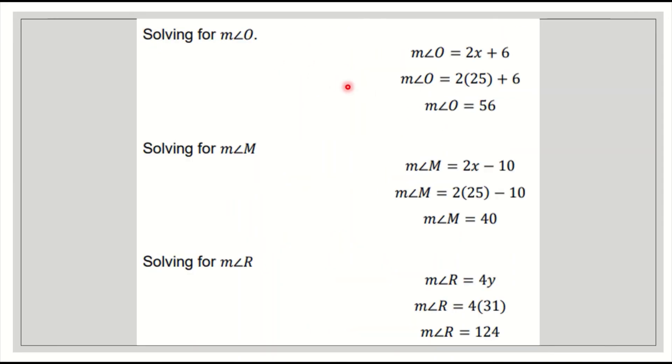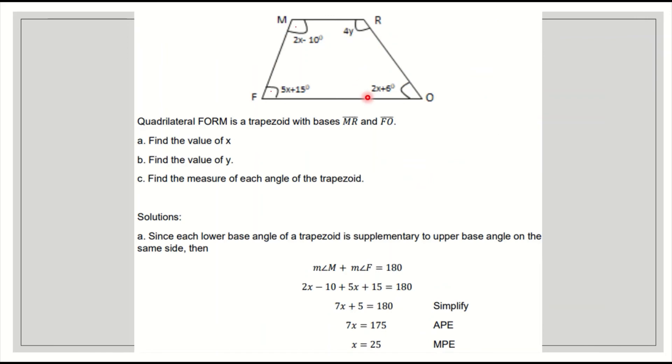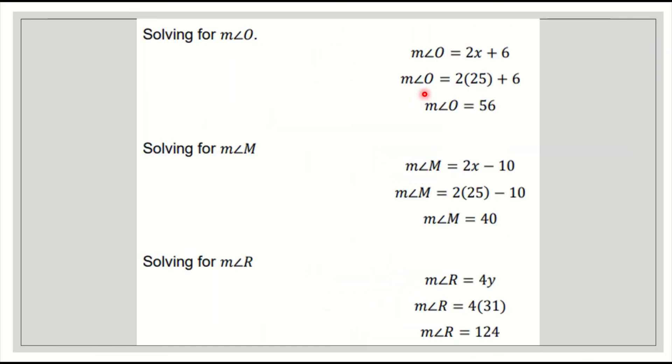Solving for O: 2 times 25 is 50 plus 6 is 56. That is for O. For M: 2x minus 10, 2 times 25 is 50 minus 10 is 40. For R: 4y, y is 31, 4 times 31 is 124. That's it.